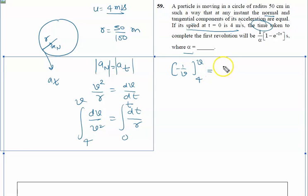Similarly here it is t upon r. So the next step: it is minus 1 by v minus, minus plus 1 by 4 equals t upon r. Next step: minus 1 by v equals t upon r minus 1 by 4.